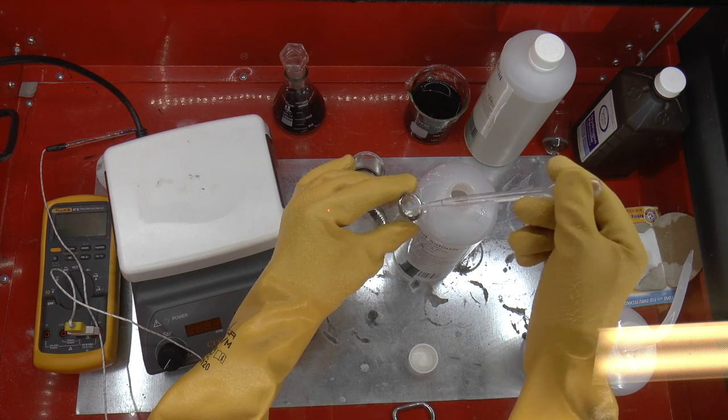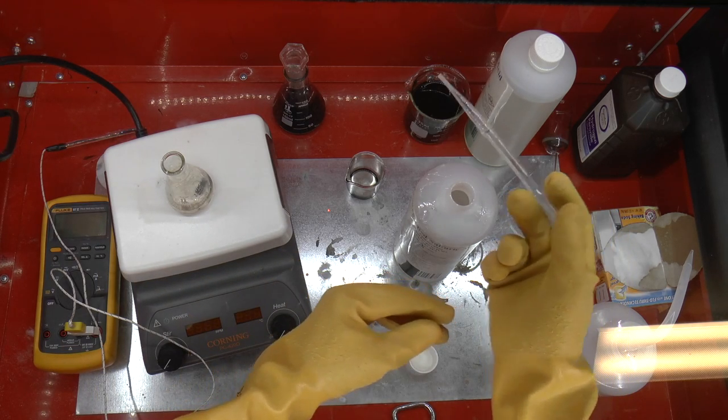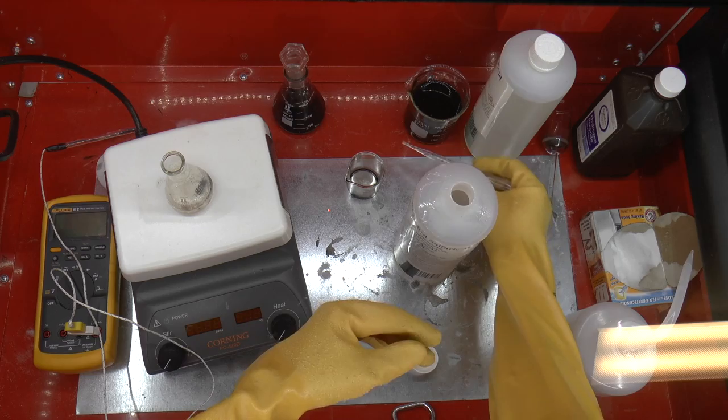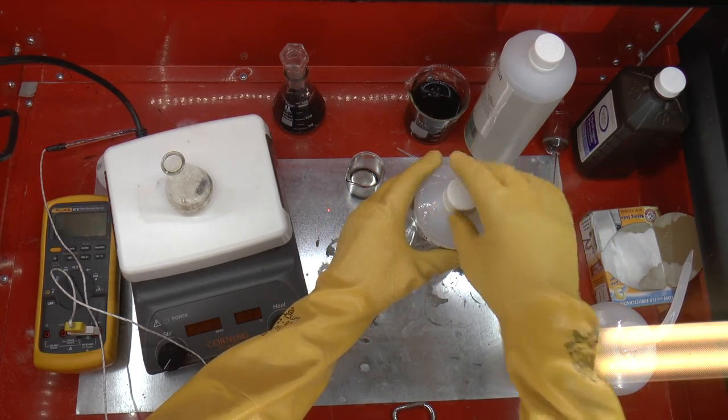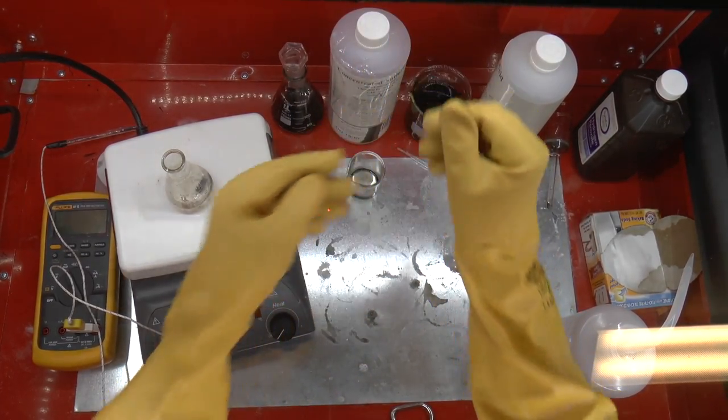Once we've finished with 20 milliliters, we're going to set it on the hot plate. I'm going to set the pipette aside because it is a little bit wet with sulfuric acid, cap off the sulfuric acid and set it safely aside.